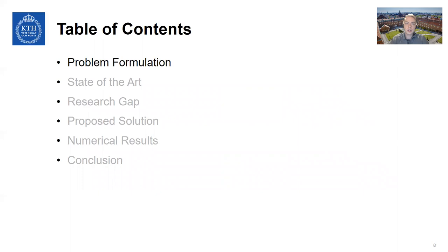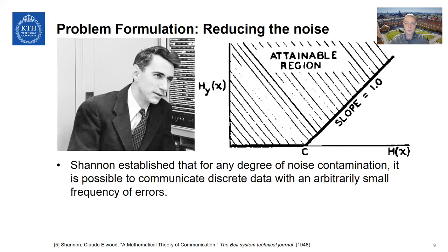With that completion of the background, I'll move on to give a clearer problem formulation of what problem we're trying to solve in our work. And that problem is the reduction of noise. For digital communication systems, Shannon has established that for any degree of noise contamination, it's possible to communicate discrete data with an arbitrarily small frequency of errors. And as you probably know, this is possible by introducing some sort of redundancy of information. For instance, you might be employing a forward error correcting code over the channel.